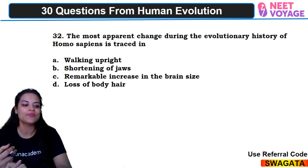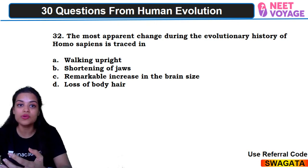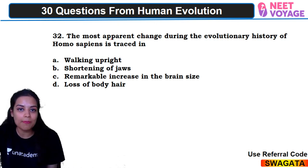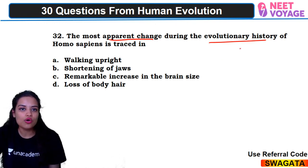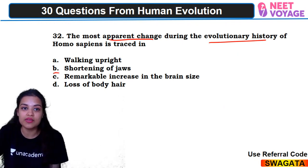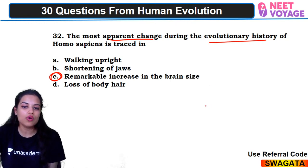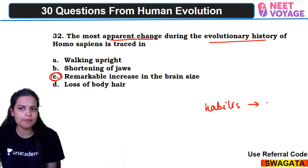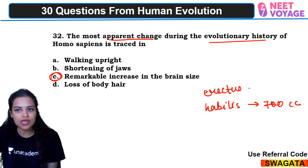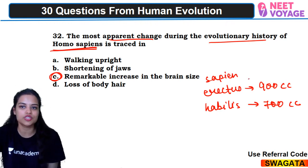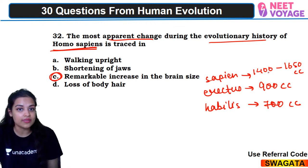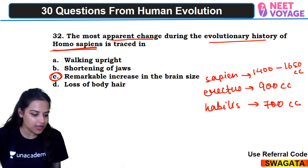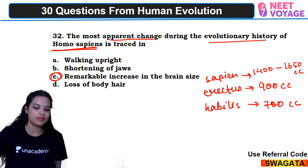Bonus question 32: the most apparent change during the evolutionary history of Homo sapiens. This question was asked in NEET 2017. What we see in evolution of Homo sapiens is a remarkable increase in brain size: Homo habilis had around 700 cc, Homo erectus had around 900 cc, and Homo sapiens had 1400 to 1650 cc. So C — remarkable increase in brain size — is the right answer. Surendra Dahiya and Ram Prasad answered correctly.